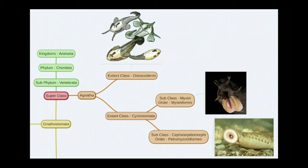In subclass Myxini we have order Myxiniformes, and in subclass Cephalaspidomorphi we have order Petromyzontiformes. The example for Myxiniformes is Myxine, the hagfish. The example for Cephalaspidomorphi order Petromyzontiformes is the lamprey.